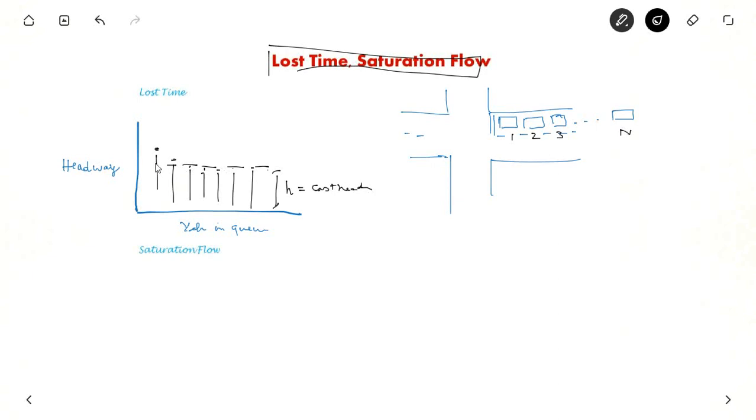And so the extra time taken by the first few vehicles is called the lost time, L. So there will be a lost time for each phase.